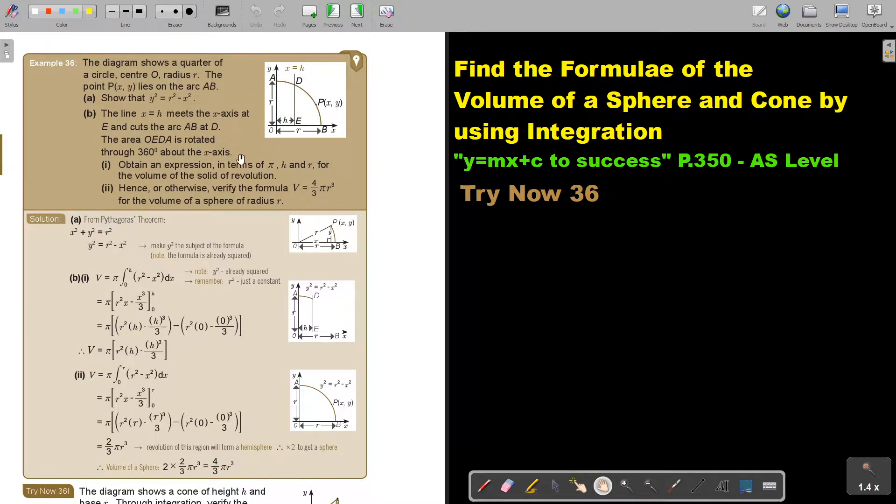Okay let's look at the example. The diagram shows a quarter of a circle, center O radius R. The point (x,y) lies on the arc AB. Show that y² = R² - x².